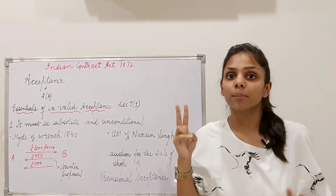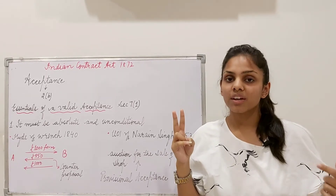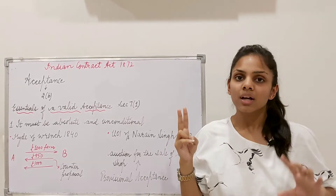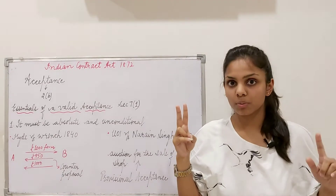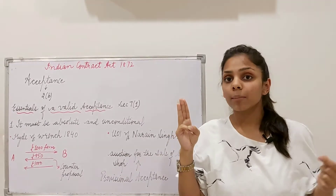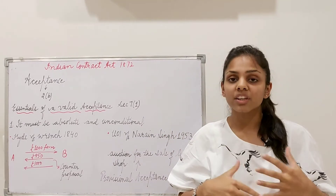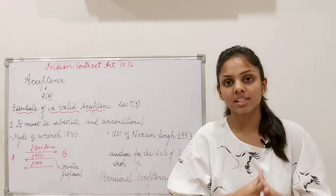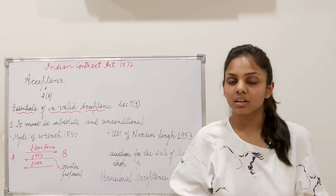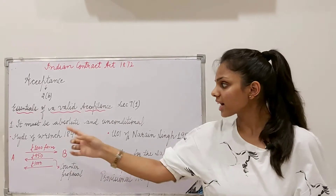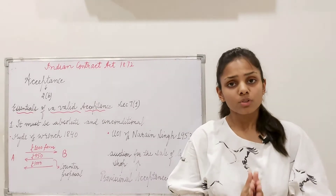The second is that acceptance must be communicated — just as we discussed that proposal must be communicated, covering Sections 3, 4, and 9 of the Indian Contract Act. Third, it must be communicated in some usual and reasonable manner. And fourth, acceptance must be made while the offer is still subsisting. Today we will discuss only the first essential: acceptance must be absolute and unqualified. Unqualified means unconditional.